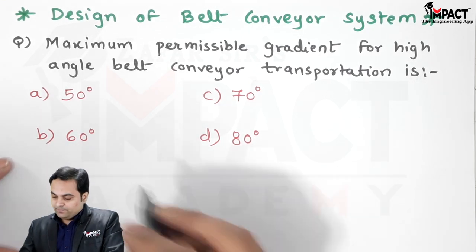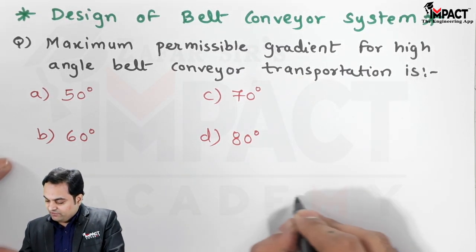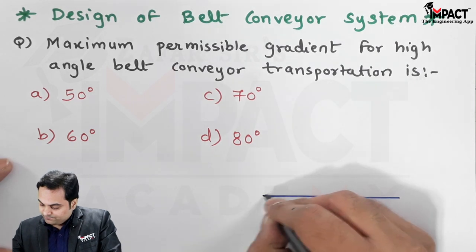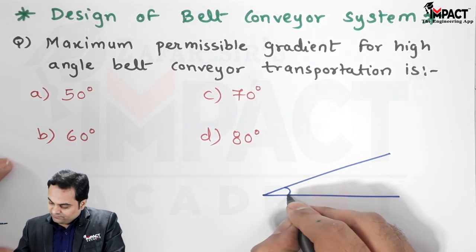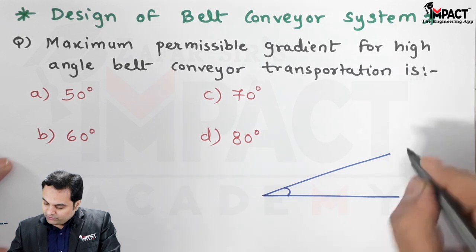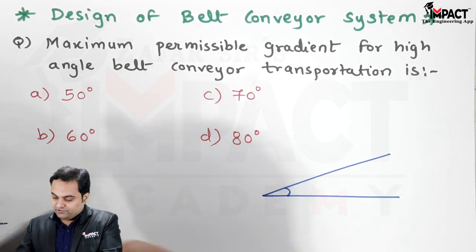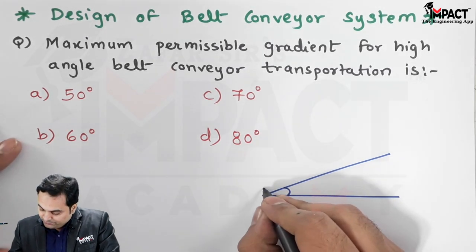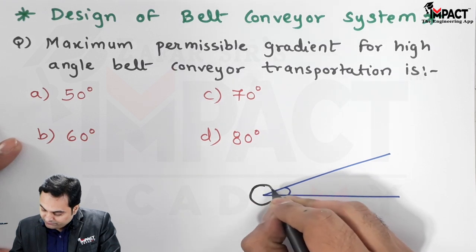Various angles are given. By gradient, we mean that if we have a horizontal line, then this is the gradient angle. Over here we want to transfer the material. For example, there would be one of the pulleys over here...